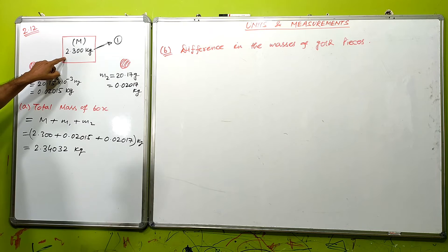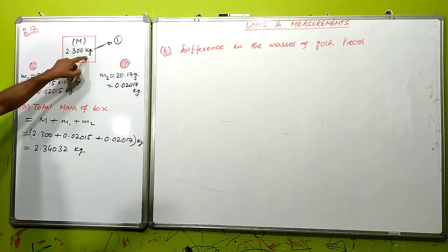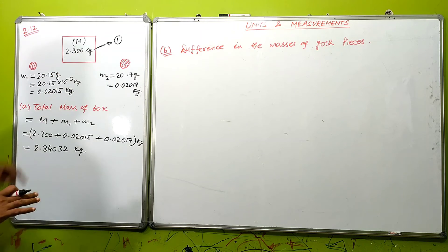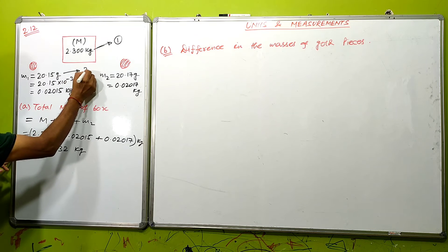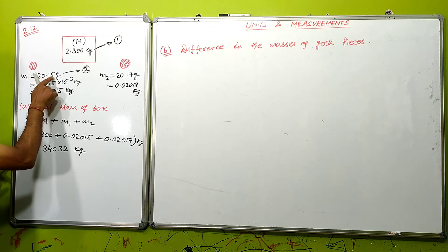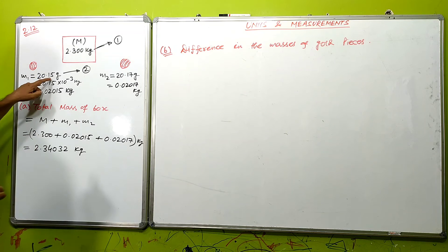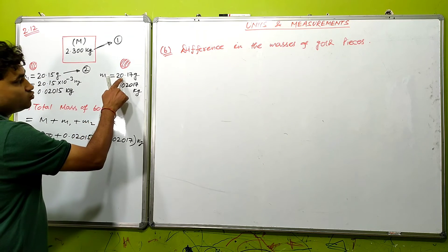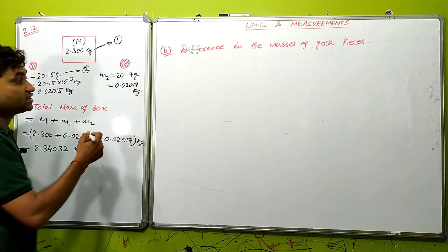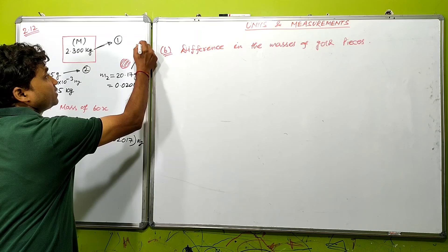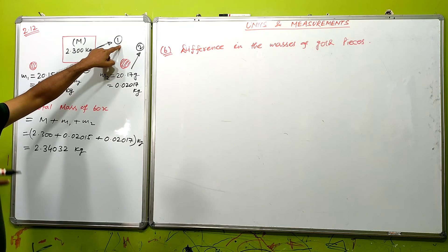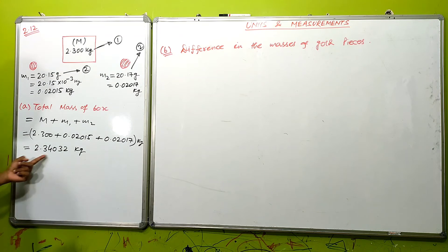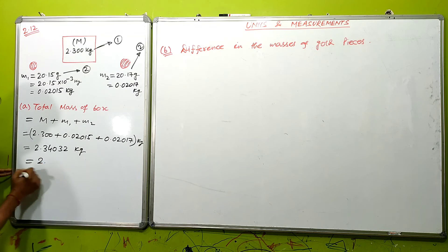So 2.300 kg has 1 decimal place when written as 2.3. Now 20.15 g has 2 decimal places — we consider the 1 and 5. Similarly, 20.17 g also has 2 decimal places. The minimum decimal places among all values is 1, so our final answer should have only 1 decimal place.